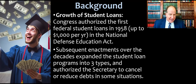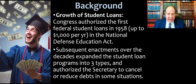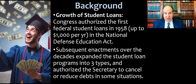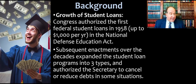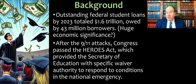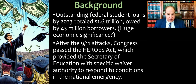A little bit of background: this first comes up in 1958. Congress passed something called the National Defense Education Act that authorized the first federal student loans for up to $1,000 a year. Remember that tuition and everything else in 1958 was much cheaper than it is today. Subsequent enactments over the decades expanded the student loan program considerably, subdivided it into three different types, and authorized the Secretary of Education to sometimes cancel, waive, or reduce debts in special circumstances. By the time we get to 2023, outstanding federal student loans total $1.6 trillion and are owed by 43 million borrowers.